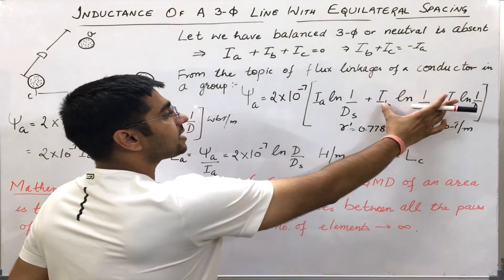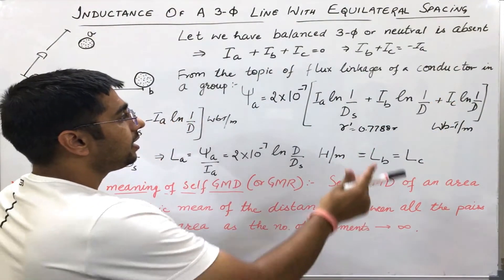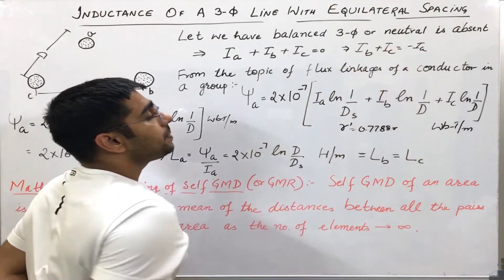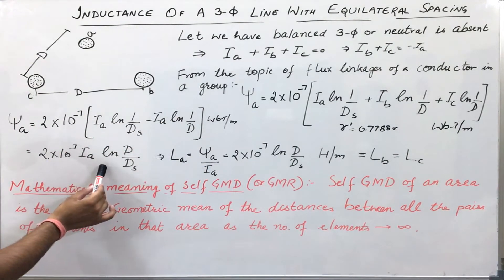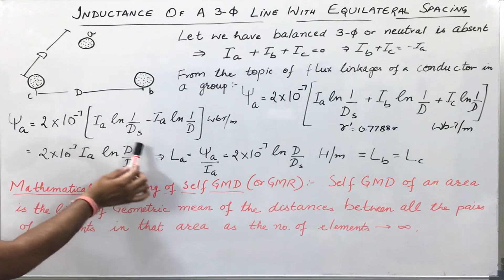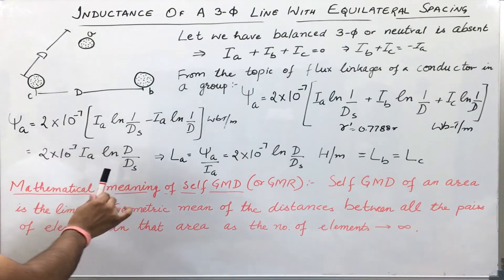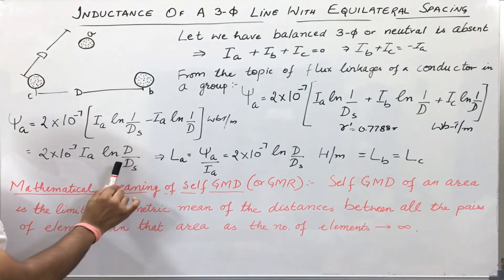Writing minus Ia in place of IB plus IC and taking Ia common will give this relation: 2 times 10 to the power minus 7 natural log d by ds.